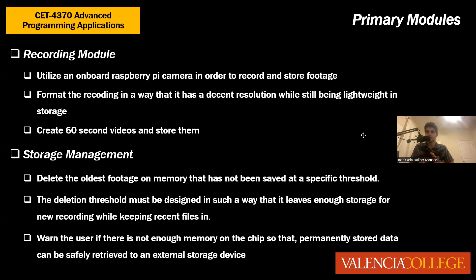For example, if you take 10 minutes to go to Walmart, it's going to record 10 separate videos. Those videos can then be put together in a video editor and you have 10 minutes of recording. That's a simple way to mitigate the damage that comes when turning off the Pi, because if the system recorded 10-minute or 5-minute videos, all that data would be lost on shutdown. To minimize that, 60-second videos are sufficient.